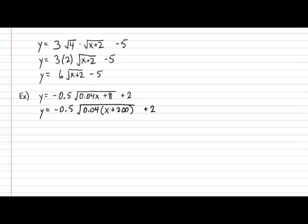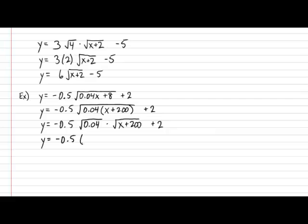But let's go one step further with a final cleanup. Y equals negative 0.5 — now apply the property of square root of a product. That will give us the square root of 0.04 multiplied by the square root of X plus 200, and the K value is never touched. One final cleanup: Y equals negative 0.5 multiplied by 0.2 — since the square root of 0.04 is 0.2 — multiplied by the square root of X plus 200, and the K value is still never touched. And finally, that gives us Y equals negative 0.1 multiplied by the square root of X plus 200, and then plus 2. Nicely cleaned up.